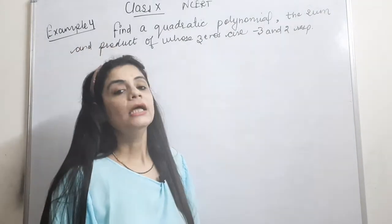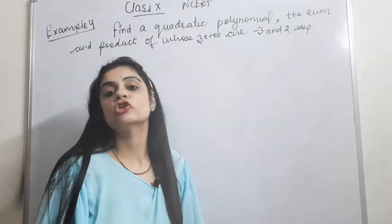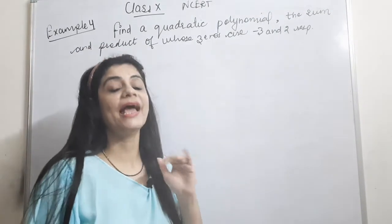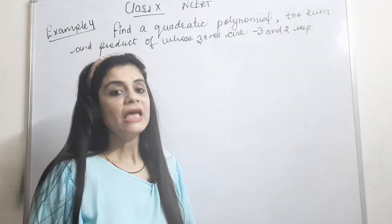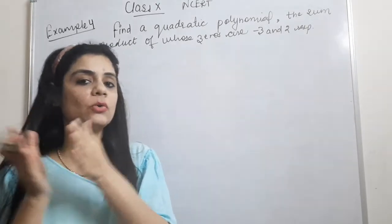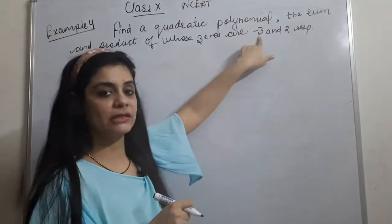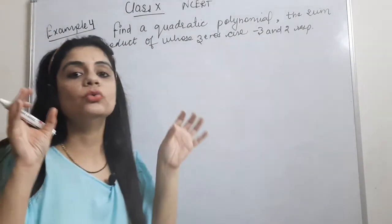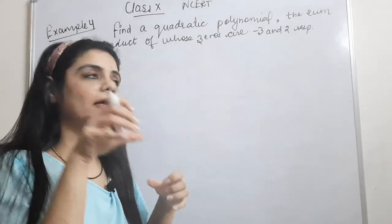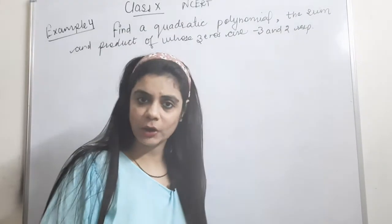I had told you that there are two zeros, which we denote as alpha and beta. If I sum alpha and beta, it will be the sum, which is given to be minus three. And if I multiply alpha and beta, it will be the product, which is given to be two.